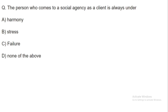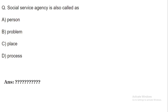Next question: A person who comes to a social agency as a client is always under — harmony, stress, failure, or none of them? The answer is stress. In social casework, a person with a problem comes to a social welfare agency or NGO as a client and is always under stress, whether facing adjustment problems or other issues requiring resolution.